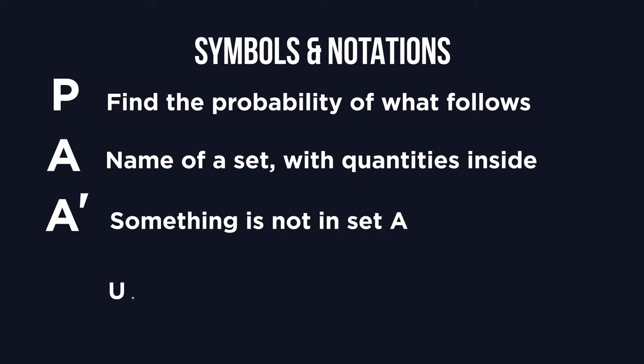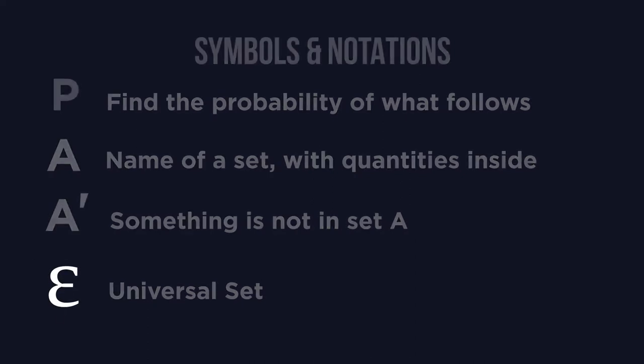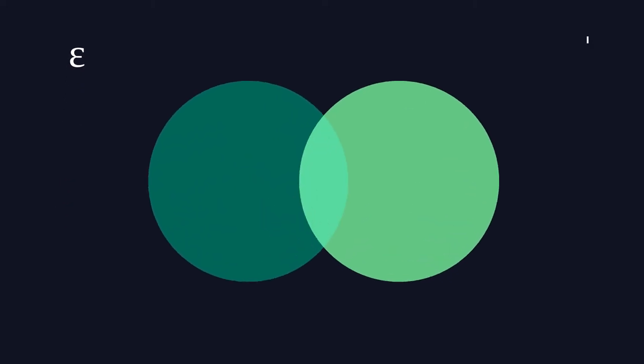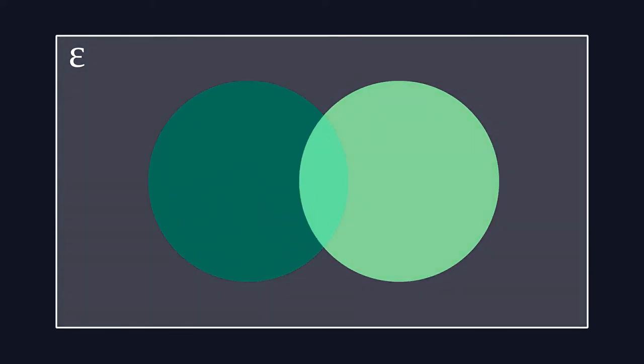We also have something called the universal set. This includes everything we are looking at, and usually has the symbol epsilon. We can often see it in the top corner of a Venn diagram, denoting that everything is within the diagram border.